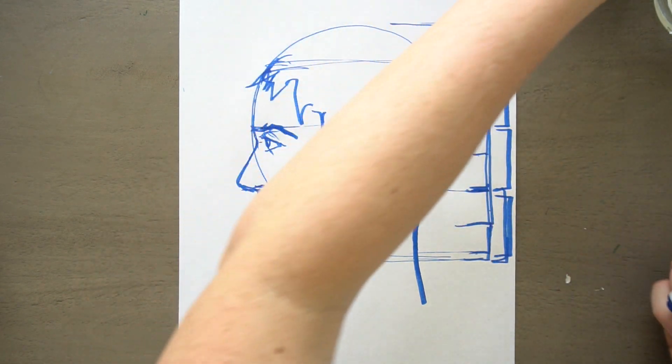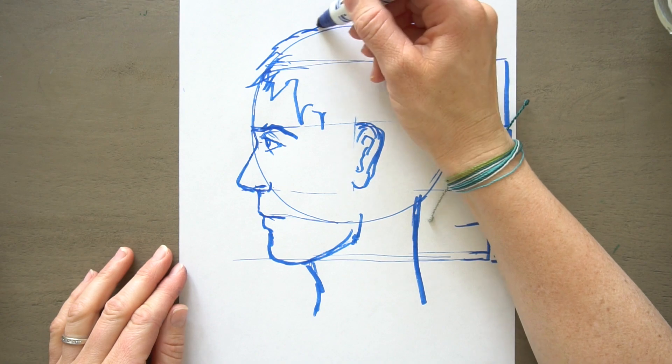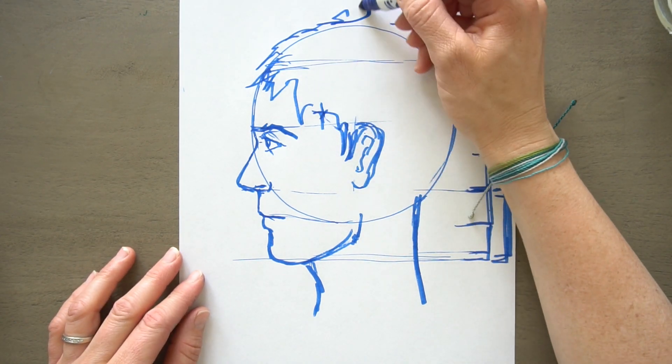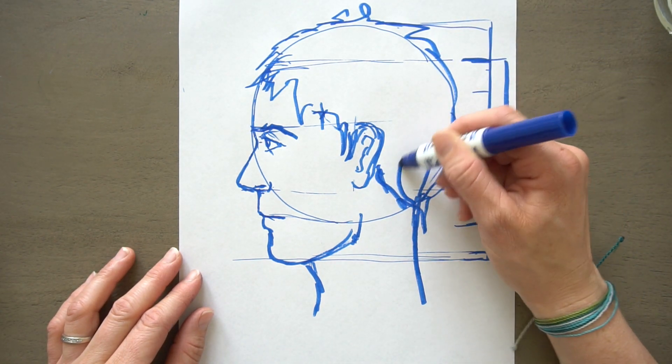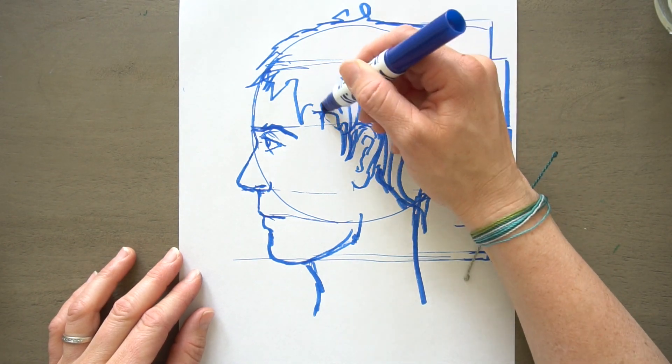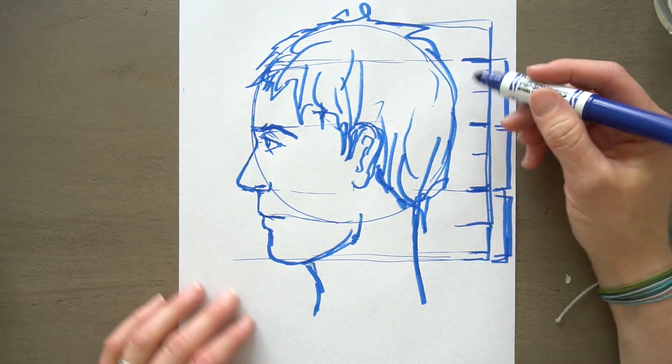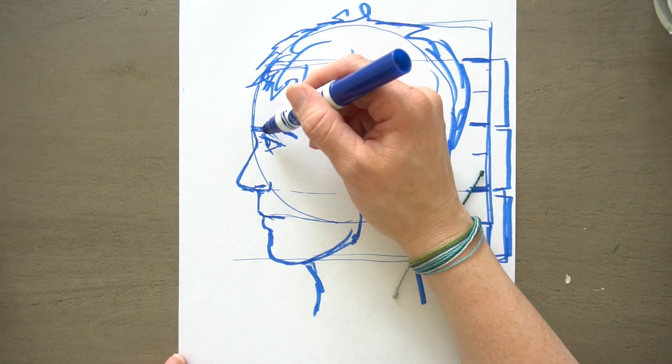So the hairline would be here. This person is going to have just like crazy hair. And hair normally would probably come, it depends on the person, you just need to look at them, but it would probably come a little bit over that line. This is messy hair. This is someone that just woke up. Okay, and they look kind of mad, and I don't know why. Maybe it's the eyebrow right here.